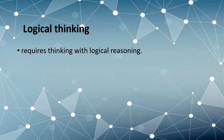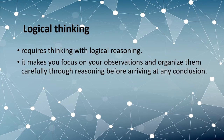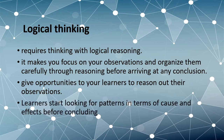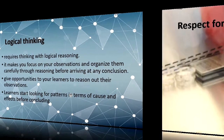The next attribute is logical thinking — thinking with logical reasoning. Logical thinking makes you focus on your observations and organize them carefully through reasoning before arriving at any conclusion. It gives opportunity to learners to reason out their observations. If you develop logical thinking among your learners by giving them opportunity to reason out their observations, they will start looking for patterns in terms of cause and effect before concluding.